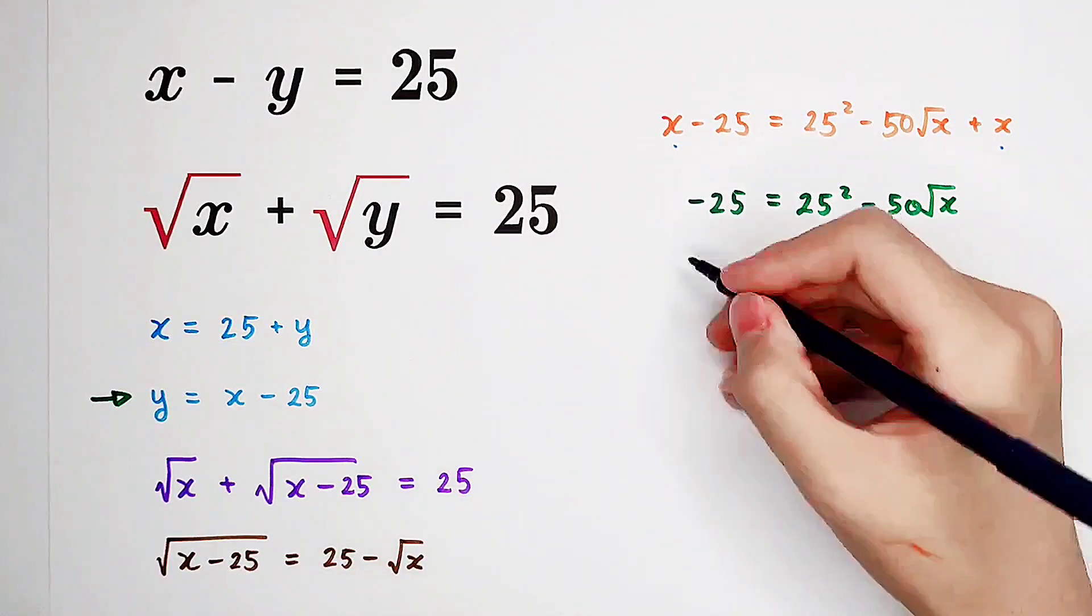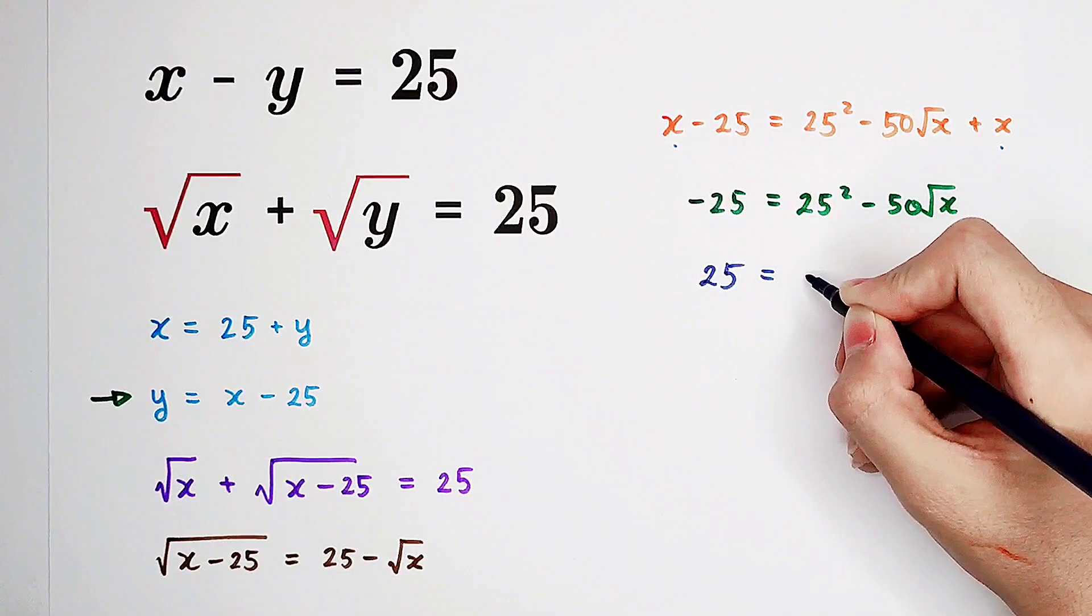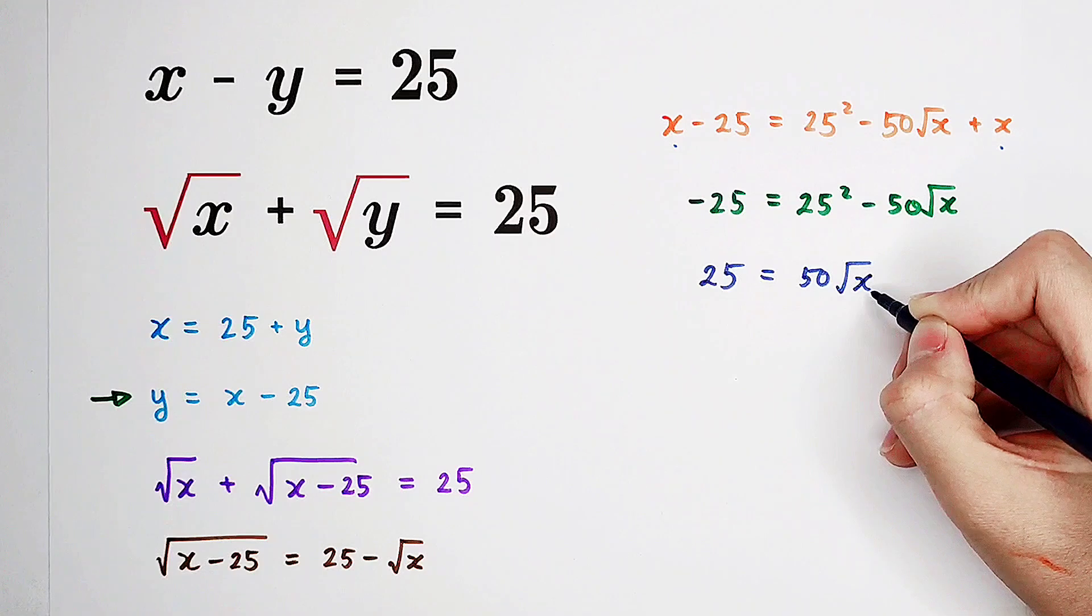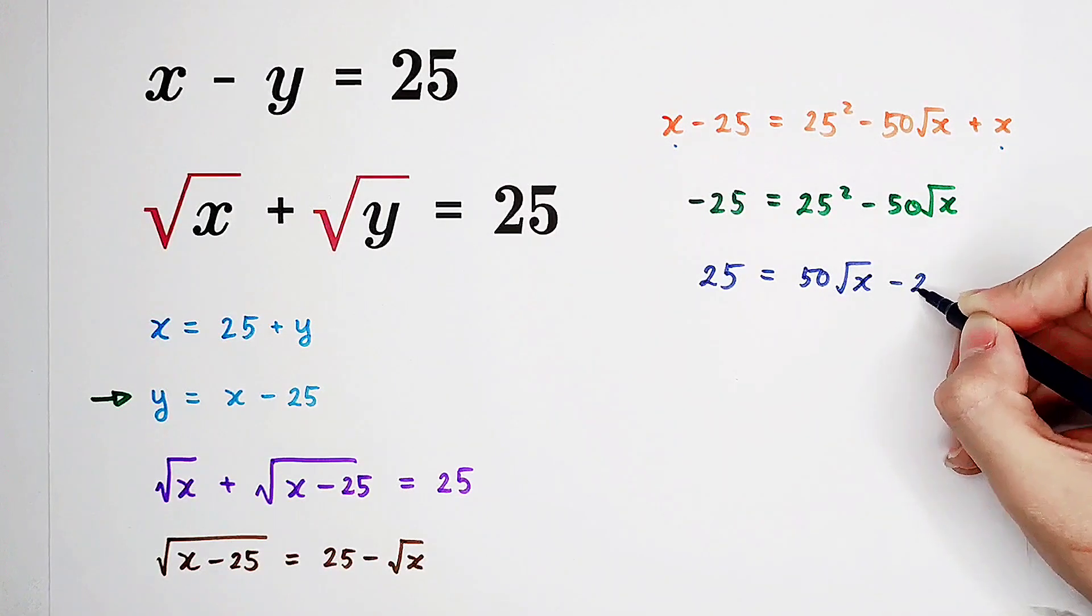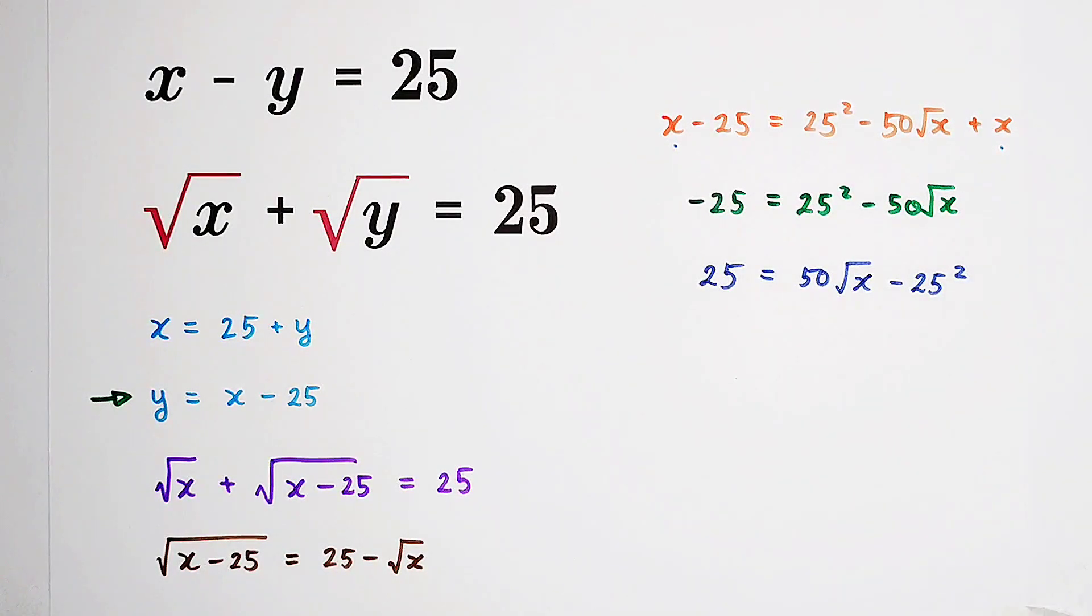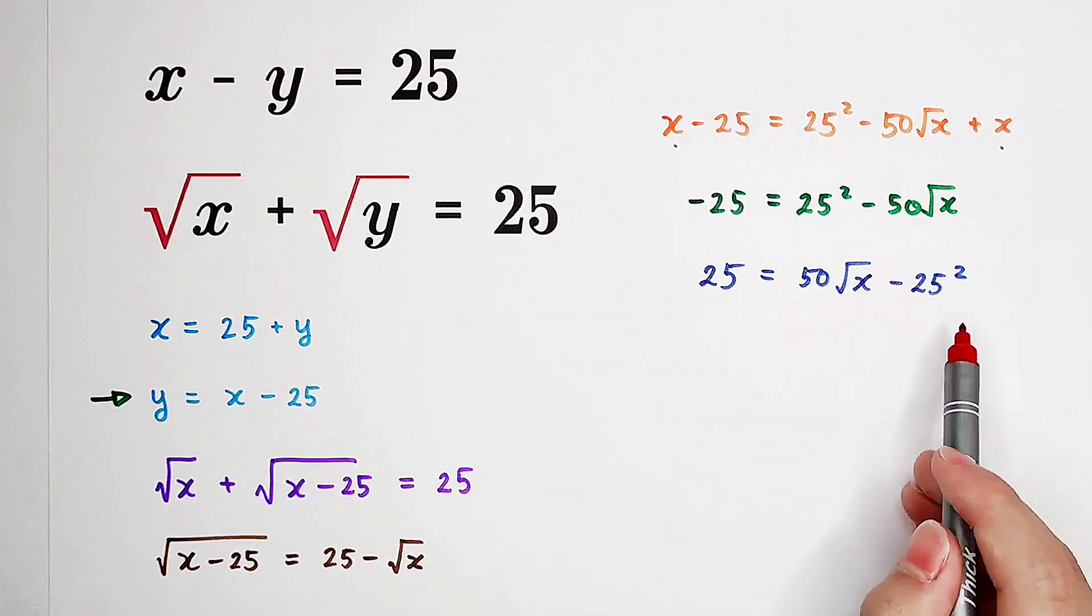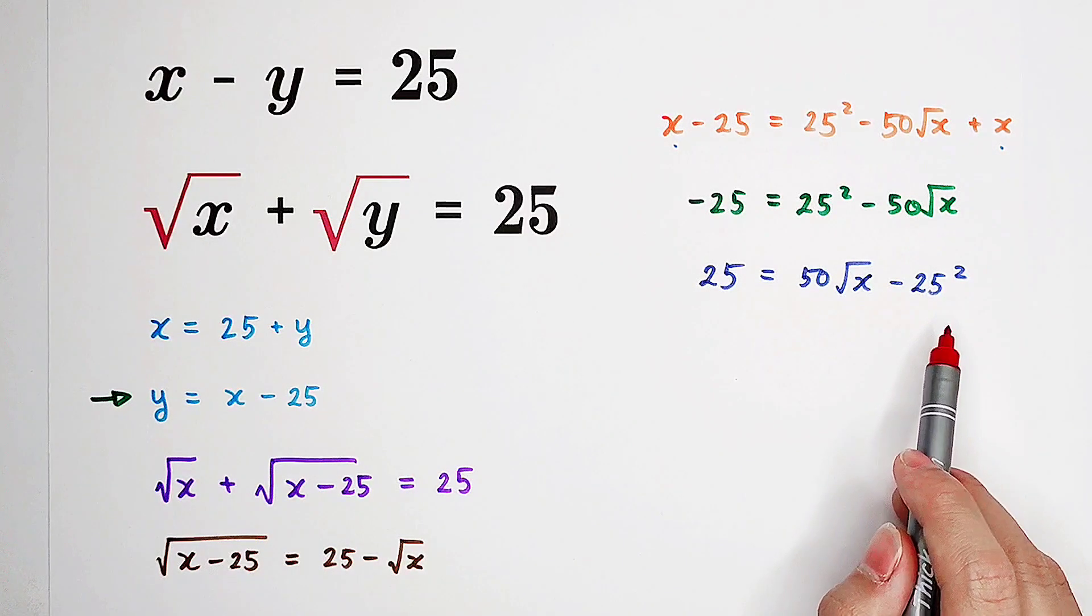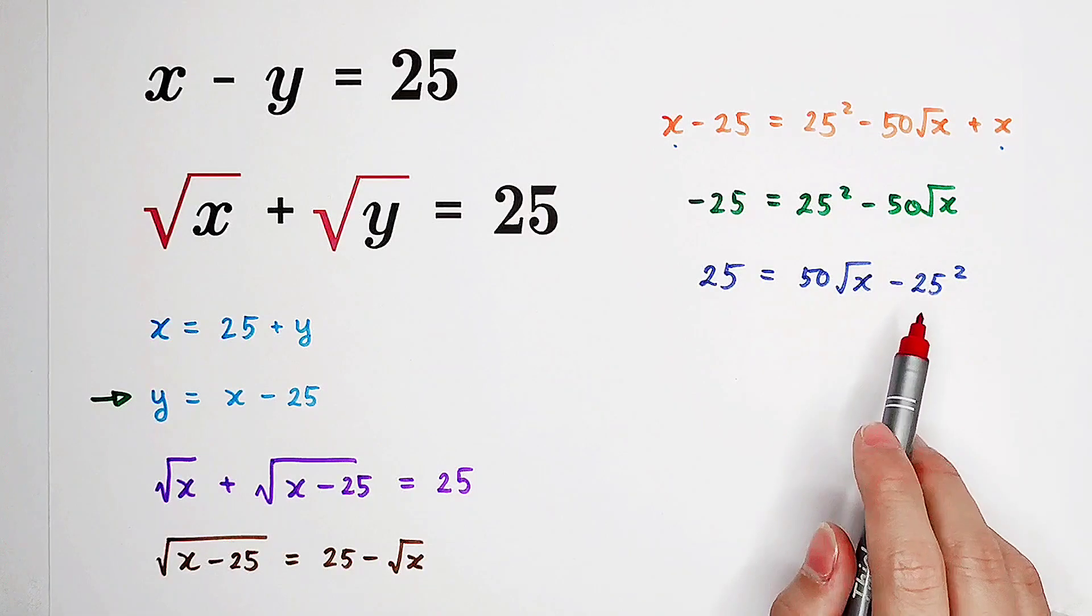Multiply both sides by negative 1. 25 is 50 times square root of x minus 25 squared. Now you can see, these three sections are divisible by 25, so that means we can divide both sides by 25.